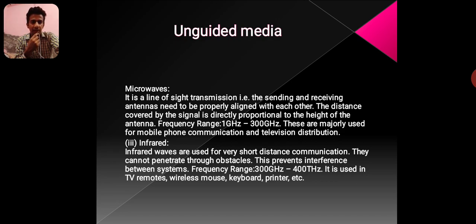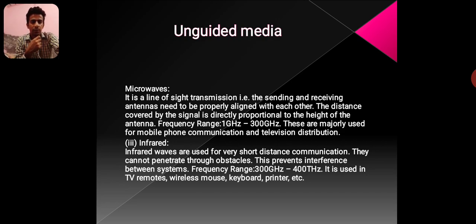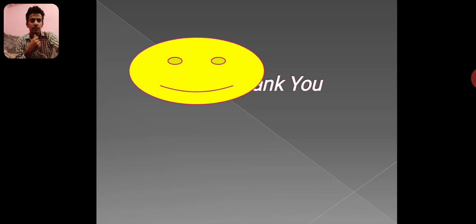Infrared. Infrared waves are used for very short-distance communication. They cannot penetrate through obstacles, which prevents interference between systems. Frequency range: 300 GHz to 400 GHz. Infrared is used in TV remotes, wireless mouse, keyboard, printers, etc. Thank you so much.